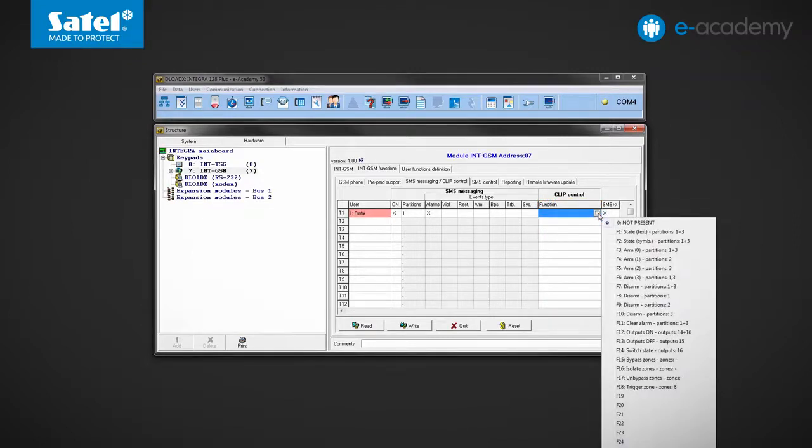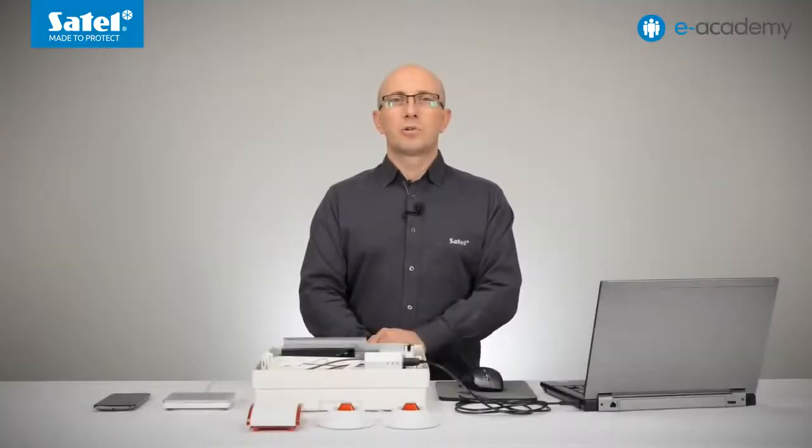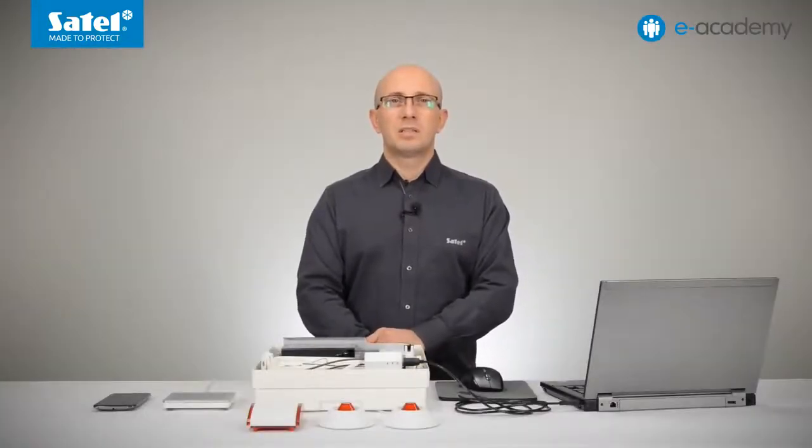Click on the function field. You can choose from a whole list of functions we have previously defined in the SMS control tab. For example, I would choose a function that should switch the state of one of the outputs. Finally, we save the data to the module. And that's all there is to configuring the SMS and clip control settings.